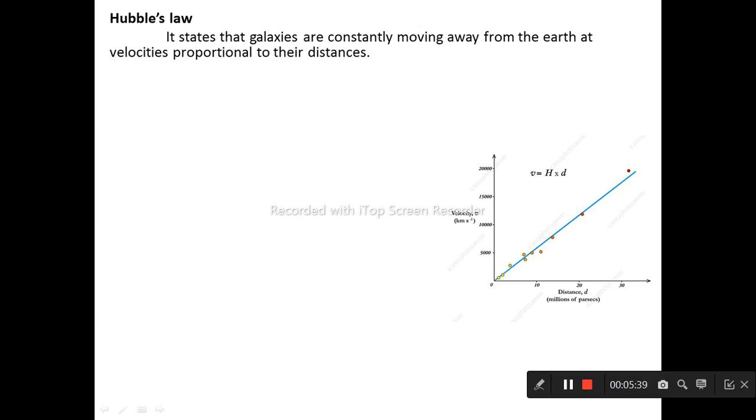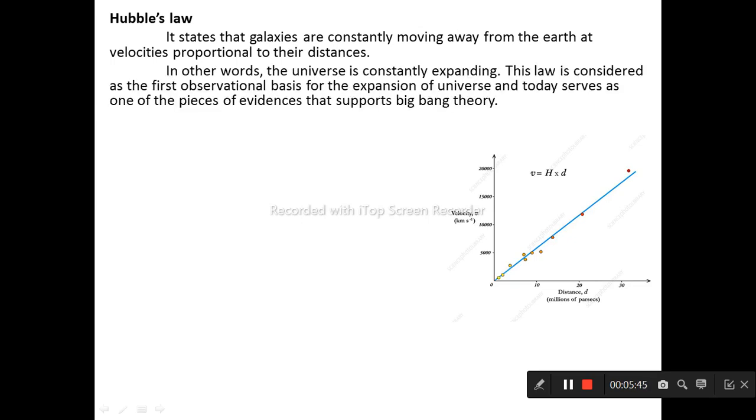Hubble's law states that galaxies are constantly moving away from the Earth at velocities proportional to their distances. In other words, the universe is constantly expanding. This law is considered as the first observational basis for the expansion of universe and today serves as one of the pieces of evidence that supports Big Bang theory.